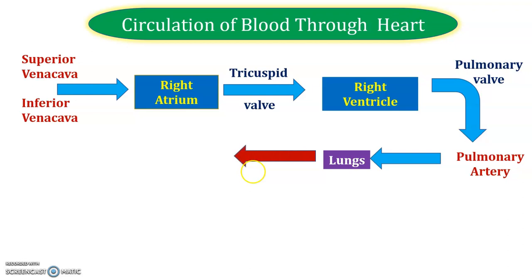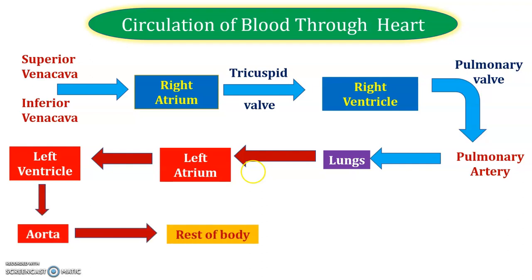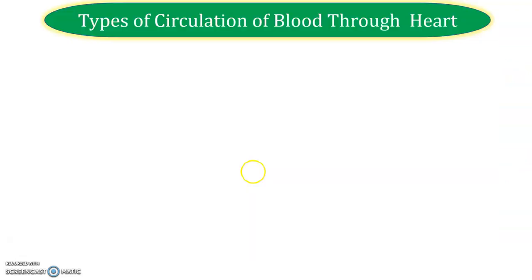After purification in the lungs, oxygenated blood is carried to the left atrium, then to the left ventricle via the bicuspid valve. From the left ventricle, blood passes through the aortic region and is distributed to the rest of the body. This is the physiology of the heart and the blood flow pathway.